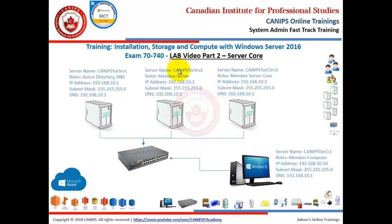Microsoft Server 2016 comes in two different editions: Standard and Datacenter. Both editions come in three different installation types: a full server installation with full graphics, second is server core which we are going to install and which is a minimal install, and third is nano server — a new type introduced with Server 2016 that was not available in 2012. In this video, I'm going to show you how to install, configure, and work with server core.